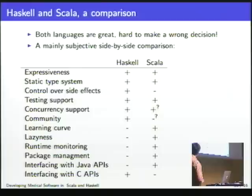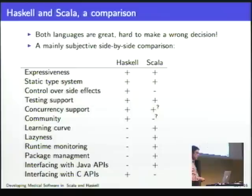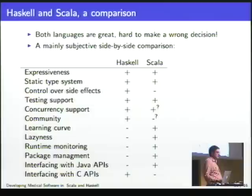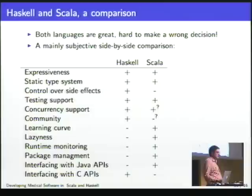Scala is better for laziness — Haskell is lazy while Scala is strict, but in Scala you can annotate certain method parameters or instance variables as lazy, which is more convenient in some situations. Monitoring is really a big plus on the Scala side. Package management and interfacing with Java APIs as well. If you need to interface with a C API, I'd go for Haskell because the FFI is a really great tool. For Scala, I think nobody wants to use the Java Native Interface.